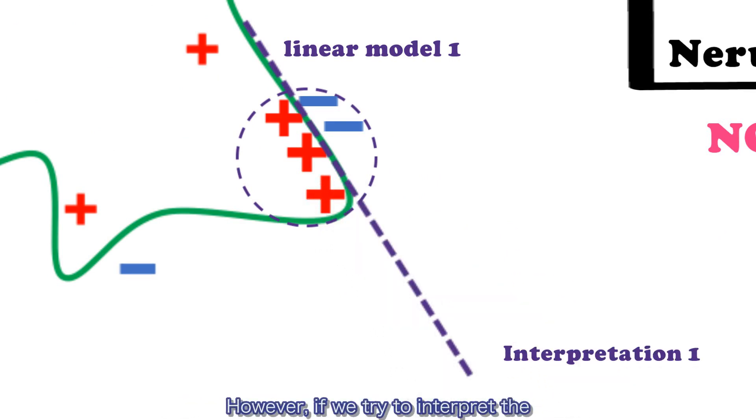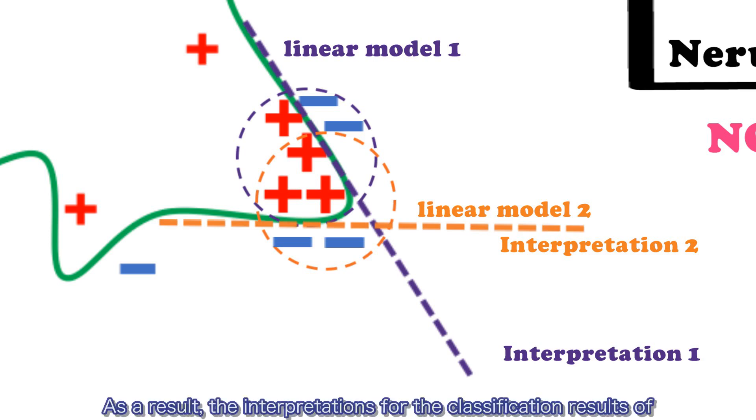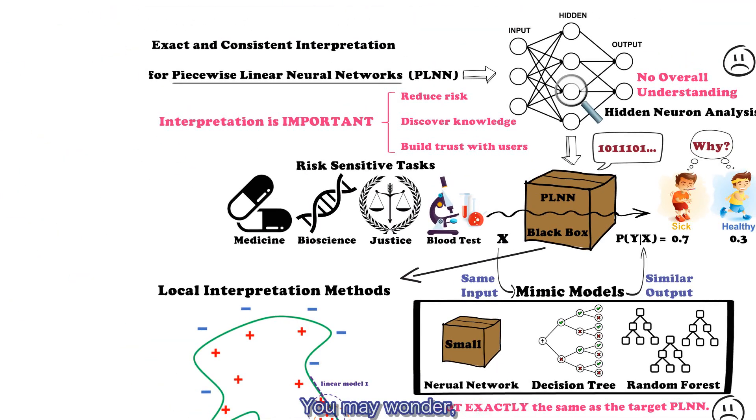However, if we try to interpret the classification result of a nearby input instance, we may have a very different interpretation. As a result, the interpretations for the classification results of nearby instances are inconsistent.